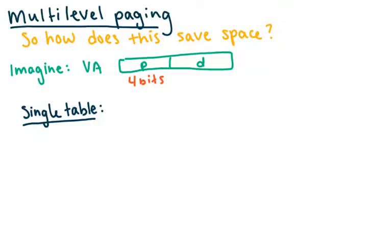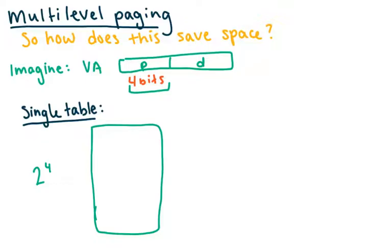Let's talk about how this saves space. Imagine a virtual address where four bits are dedicated to the page number. With four bits we can index into a page table with up to 2^4 entries, which is 16 entries. So our single-level page table would have 16 entries total.